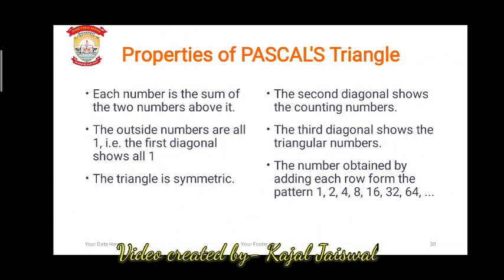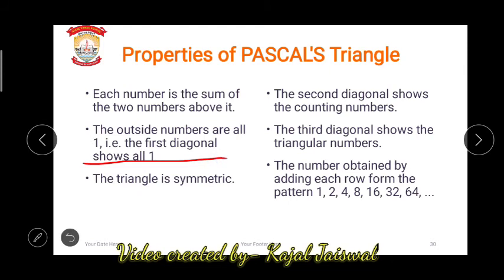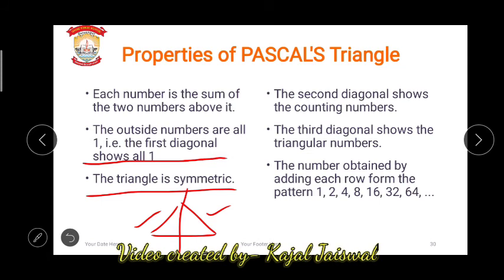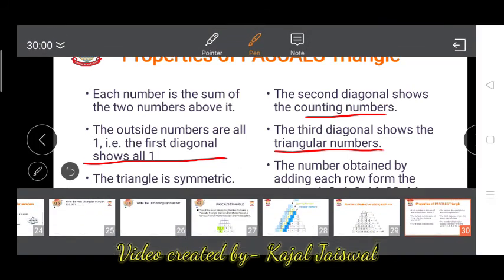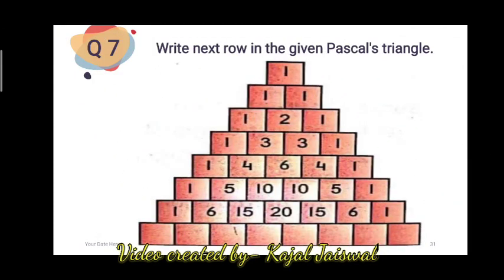To summarize Pascal's triangle properties: each number is the sum of the two numbers above it; the outside numbers are all ones; the triangle is symmetric, meaning the two halves are mirror images; the second diagonal shows counting numbers; the third diagonal shows triangular numbers; and when adding the rows, the pattern is 1, 2, 4, 8, 16, 32, 64.